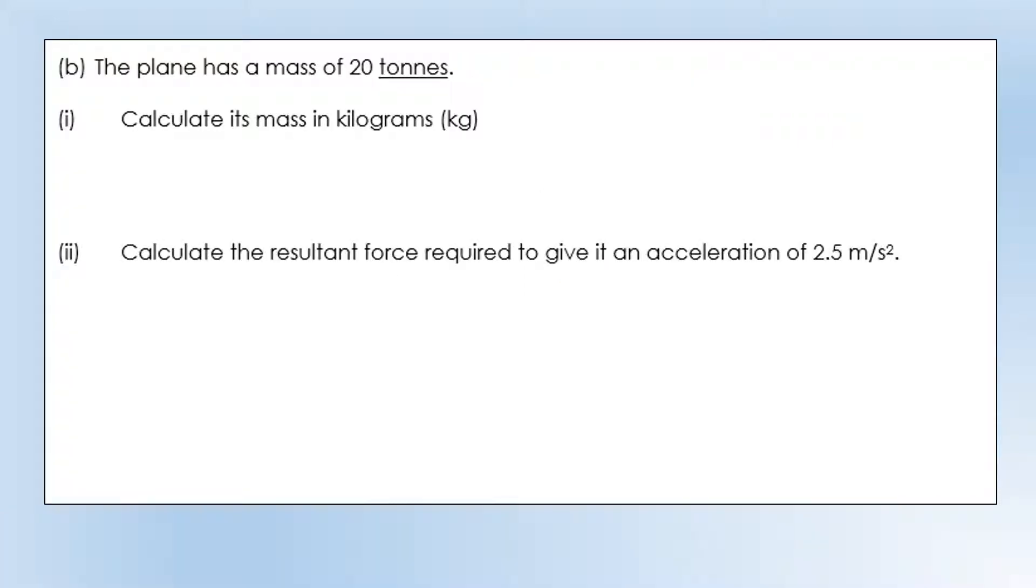Okay, so the plane has a mass of 20 tonnes. Calculate its mass in kilograms. So you might know this, or this might be something you needed to look up, but essentially one tonne is 1,000 kilograms, so 20 tonnes is going to be 20,000 kilograms.